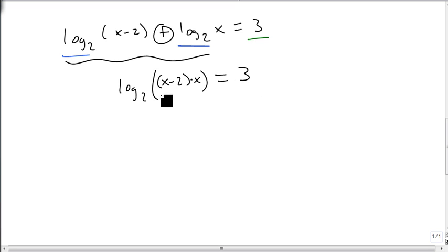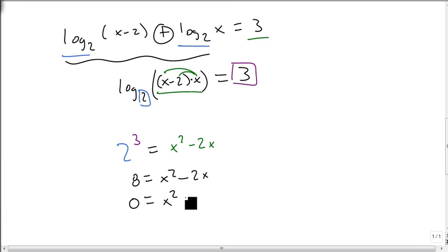We now are going to convert this to an exponential. So we're going to grab our base, 2, raise it to the power, and set that equal to the number. And I'm going to distribute to get x squared minus 2x. 2 cubed is 8. And x squared minus 2x, this is a quadratic. So we're going to set it equal to 0. And we recognize that this one factors as x minus 4 and x plus 2. So x equals 4 and x equals minus 2.